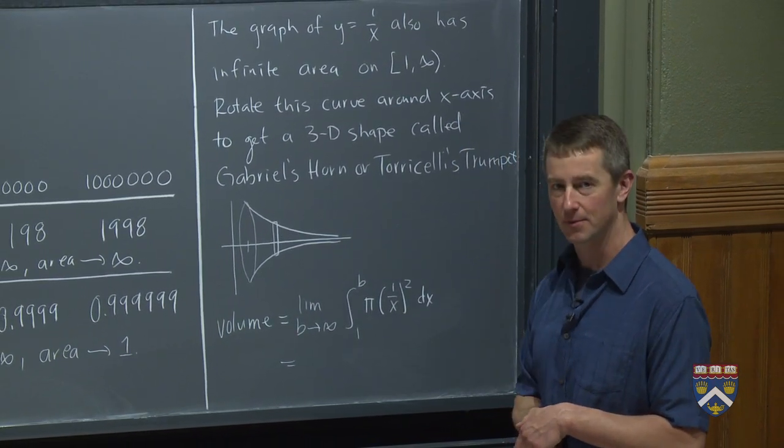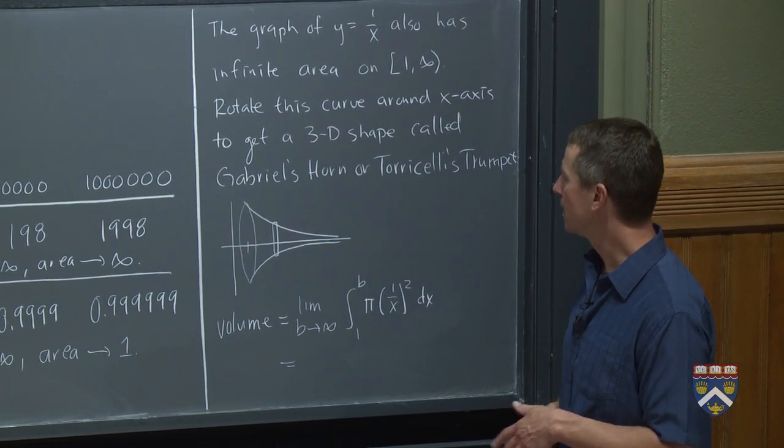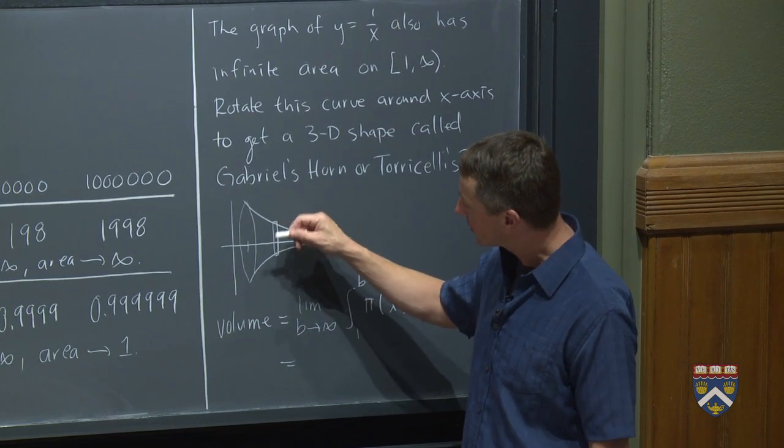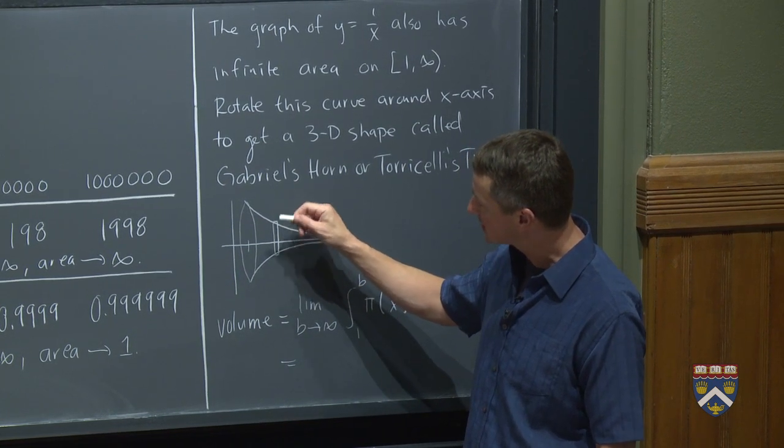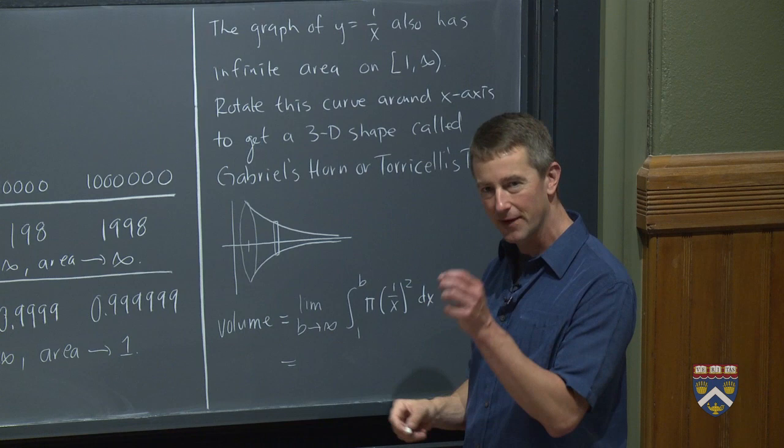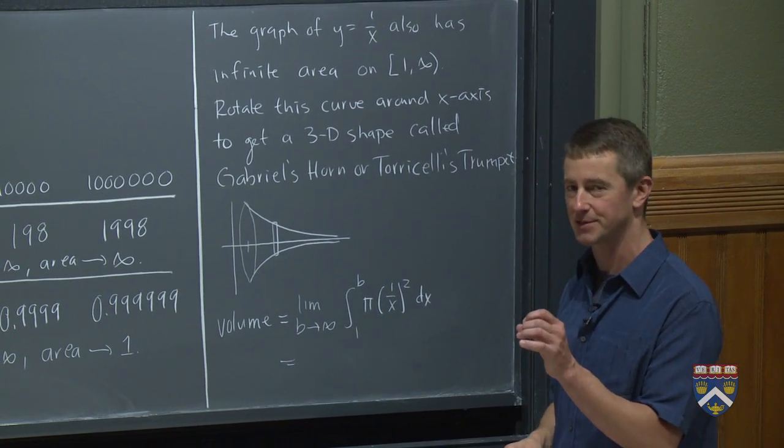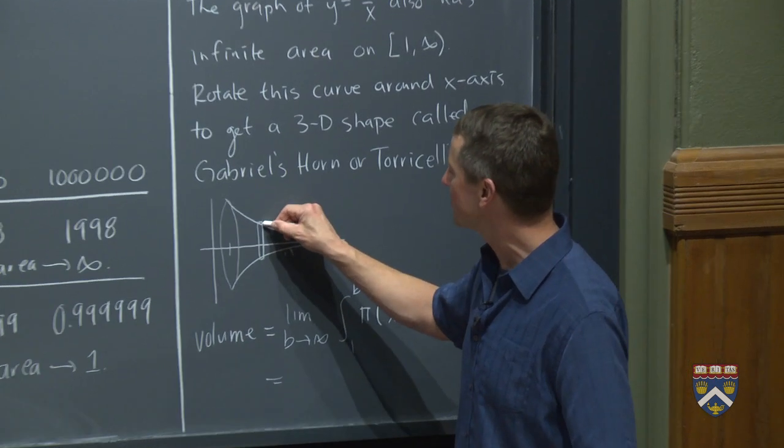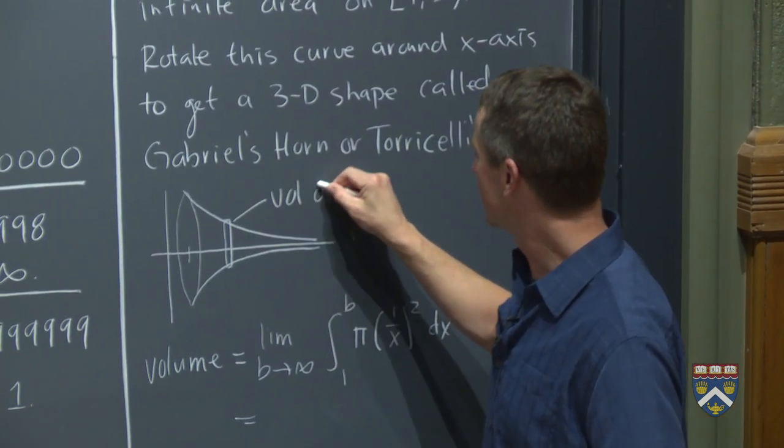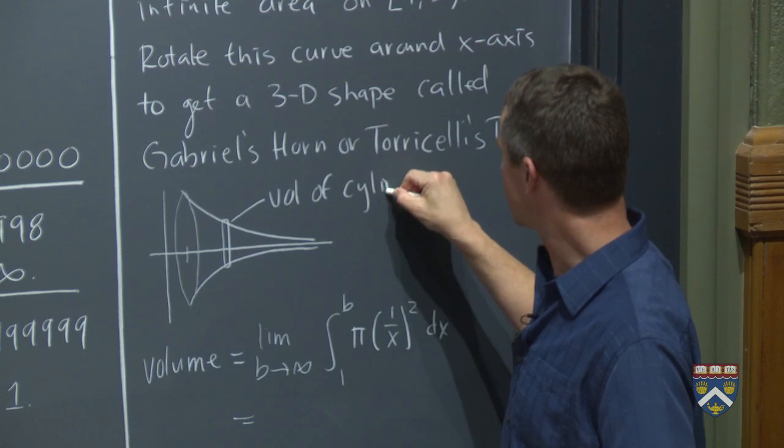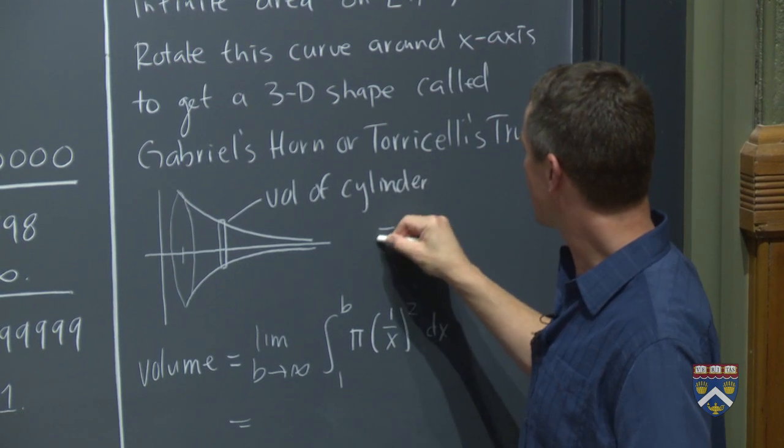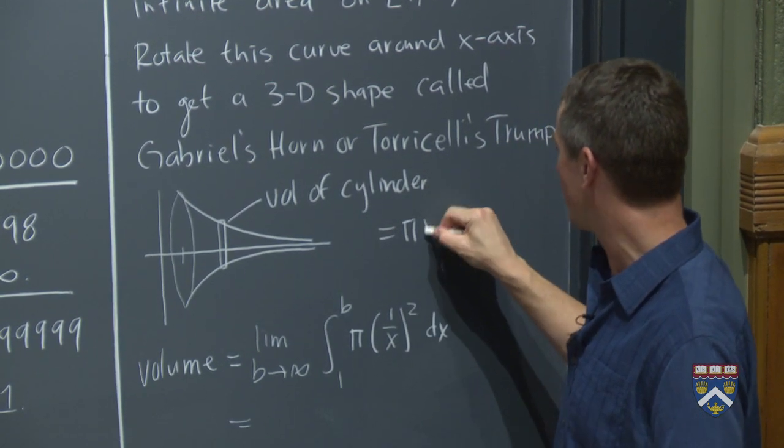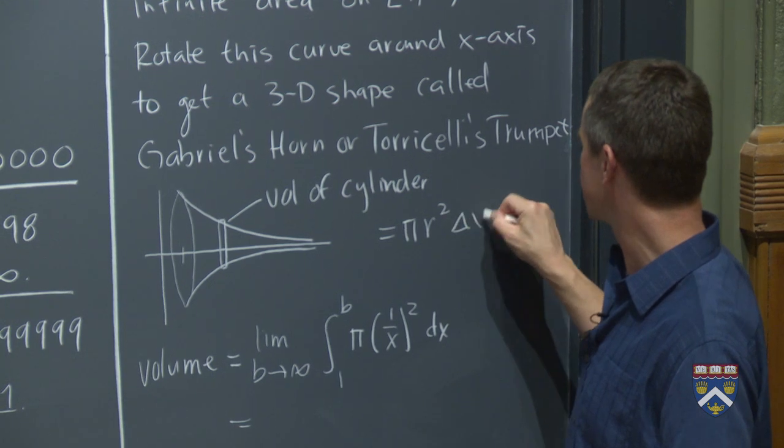What if we try to figure out the volume of this horn or trumpet? So you can imagine when I spin this little thing, if I take a little rectangle and I spin it around here, I get a very, very thin cylinder. This is just a preview for next semester, but it's too cool to resist now. I get a very thin cylinder and the volume of that little cylinder is pi times the radius squared times the thickness delta x.